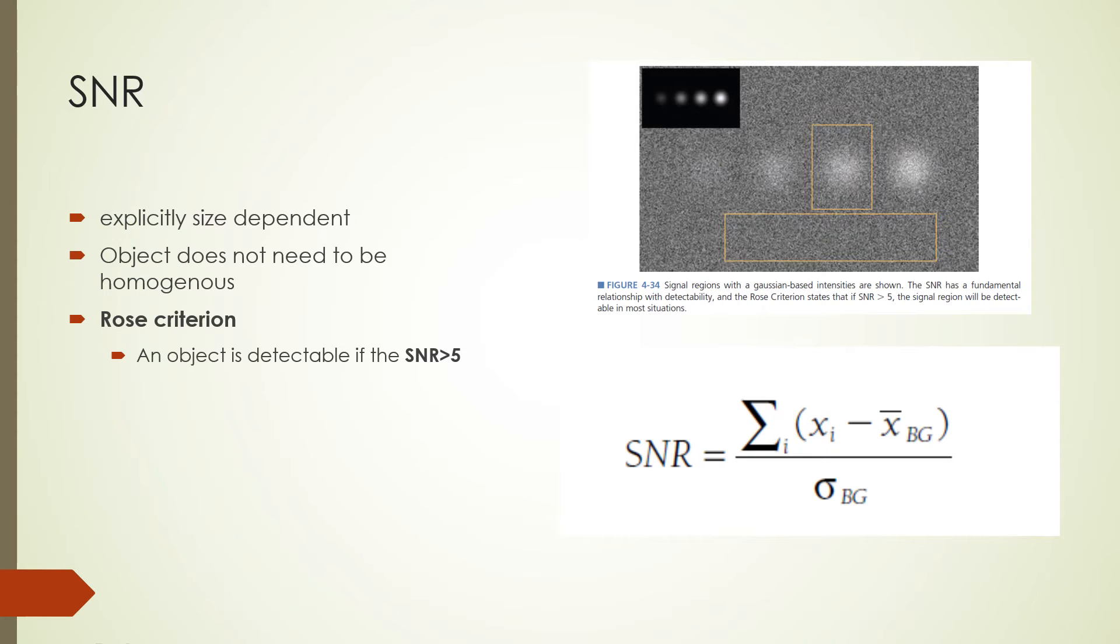Signal to noise ratio is a metric similar to the contrast to noise ratio. However, unlike contrast to noise ratio, signal to noise ratio is explicitly size dependent and the size and shape of the object are part of the calculation. Also, the object itself does not need to be homogeneous, but the background must be homogeneous. The formula on this slide shows that signal to noise ratio is a difference between the mean background signal and the signal at each pixel i in the image. This is then divided by the standard deviation of the background. Signal to noise ratio is one of the most meaningful metrics that describes how well an object will be seen by the typical observer. It was shown that if the signal to noise ratio is greater than 5, then an object will almost always be detected. This is called the Rose criterion.